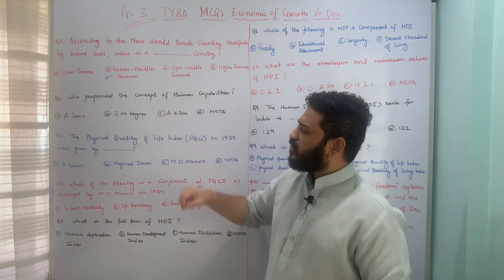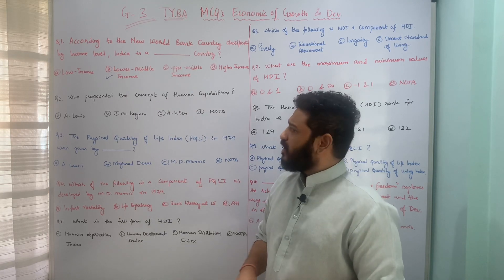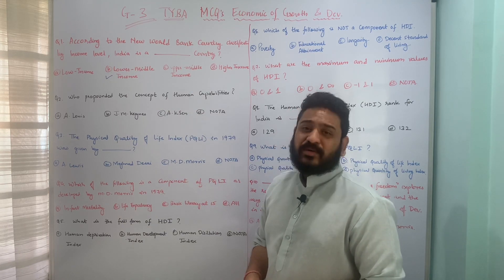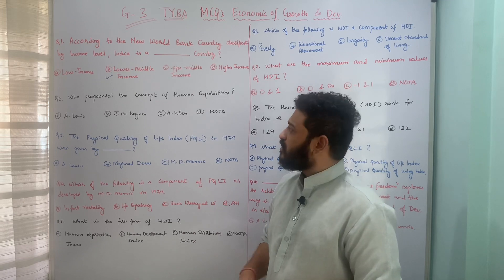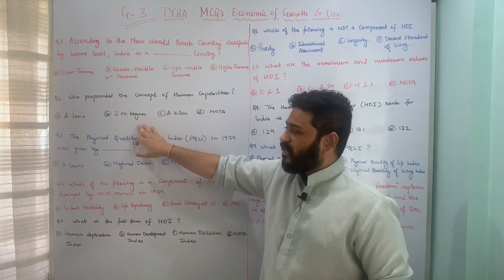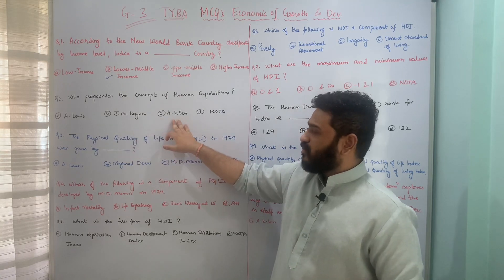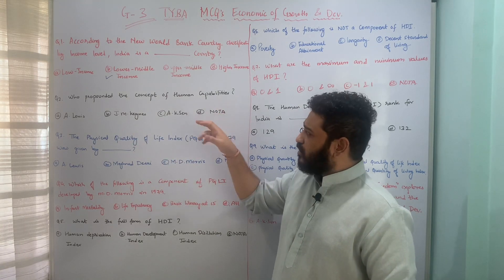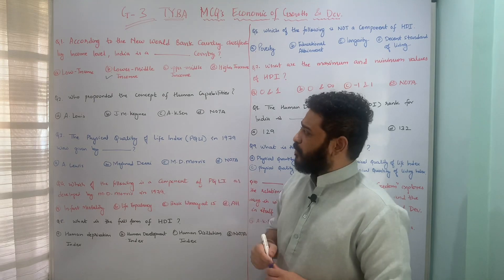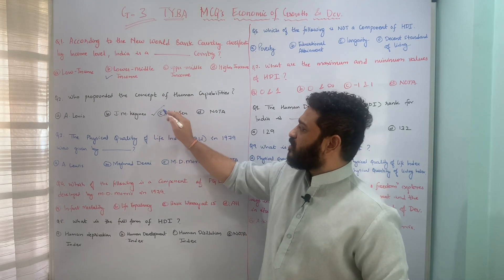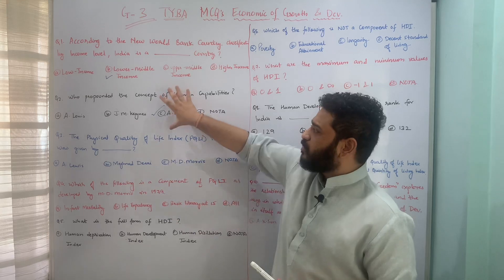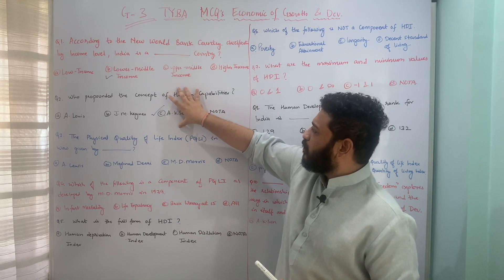The next question is related to the human capability approach: who propounded the concept of human capabilities? The underlying options are Arthur Lewis, John Maynard Keynes, Amartya Sen, or none of the above. The concept of human capabilities was propounded by Amartya Sen, and therefore option C is the correct answer. I hope the question is clear.